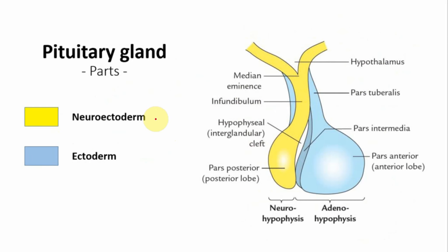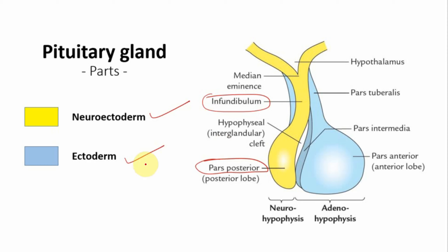To summarize the parts: the neuroectoderm forms the infundibulum and pars posterior, while the ectoderm forms the pars anterior, pars intermedia, and pars tuberalis — which surrounds the infundibulum. We should know which part of the pituitary gland is formed by neuroectoderm and which is formed by ectoderm.